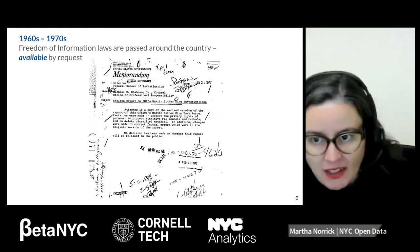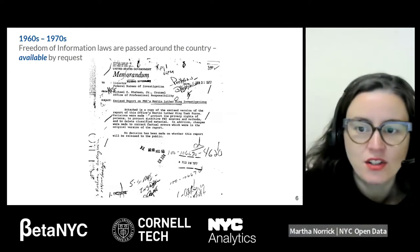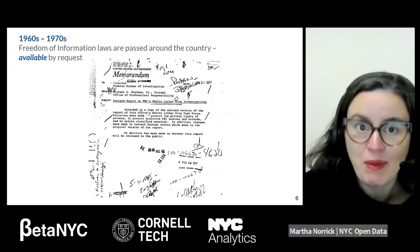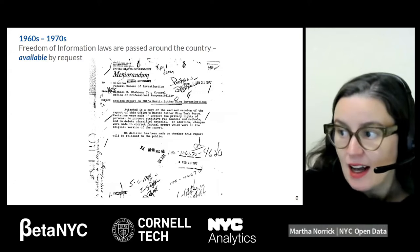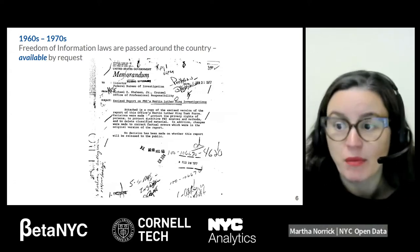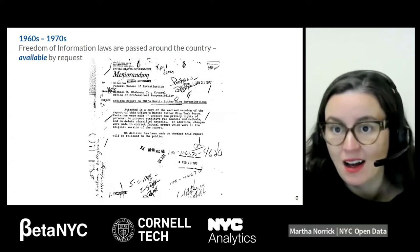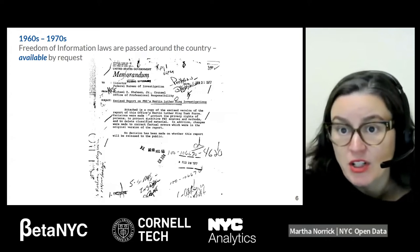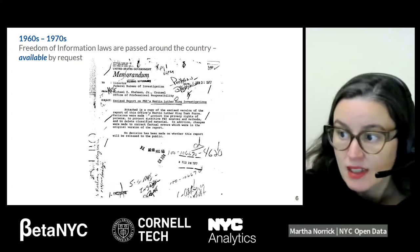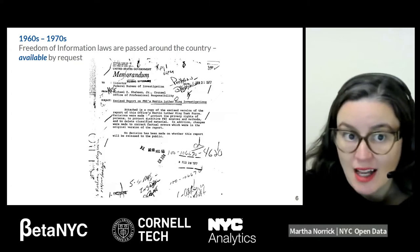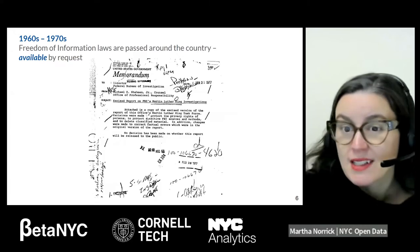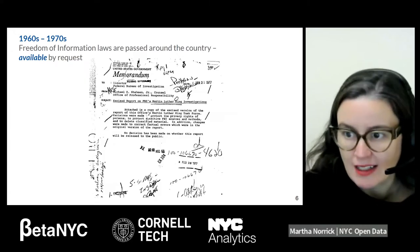Fast-forwarding about a hundred years, we're into the age of the Freedom of Information Law — Freedom of Information Acts passed around the country — which basically say that you can request data from the government and the government has to have a good reason not to share it. If you ask for it, they should share it unless there's a very good reason. This became law in New York State in 1974; it was a federal law in 1967.